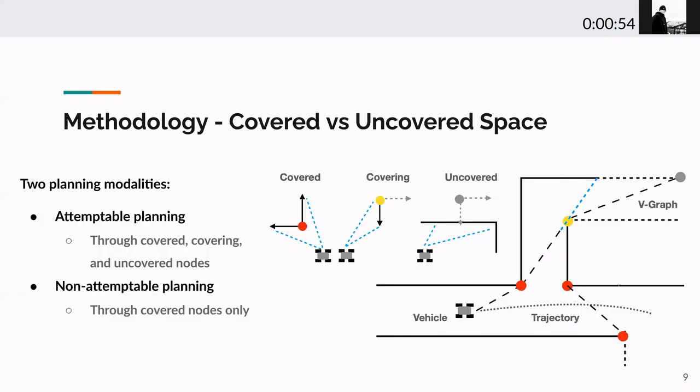Now, let's take a look at some other important characteristics. Our planner supports two planning modalities: Attemptable planning, which can guide the robot to unknown space, and non-attemptable planning, which can only guide the robot through known space. Thus, we classify our nodes into three categories as covered, covering, and uncovered node, based on how they are observed.